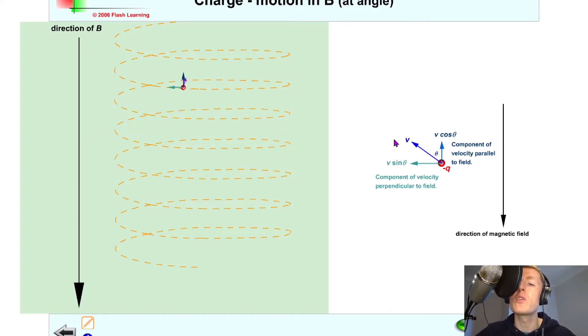And we can also label the parts of the velocity here, the components, where we've got the velocity vector v in this direction, v sine theta, which is the component of velocity perpendicular to the field, and v cos theta, which is the component of velocity parallel to the field. So v sine theta causes the circular motion, and v cos theta gives us the pitch, which is the distance between any two successive points.